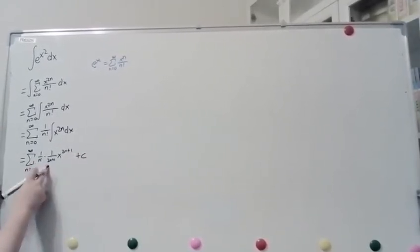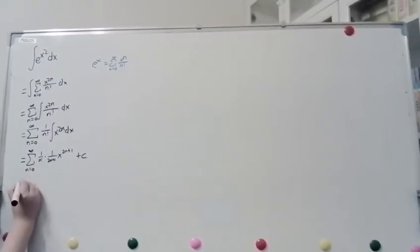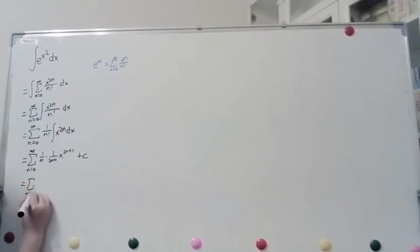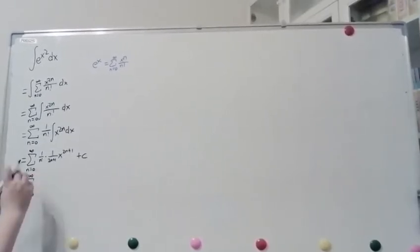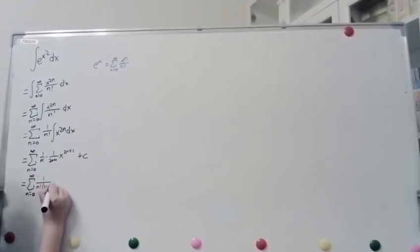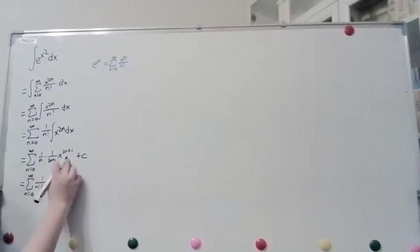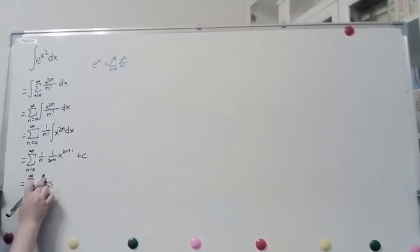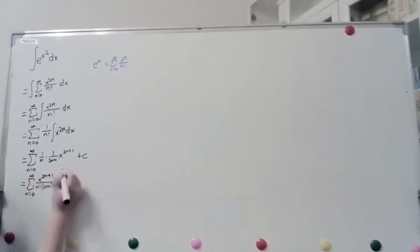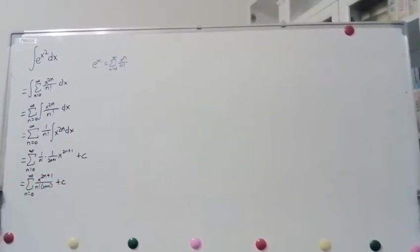So, you could distribute the n factorial, but I like to keep it just the way it is. So, we have equals the sum n equals 0 to infinity of these two denominators multiplied, and then the x to the 2n plus 1 will move to the top as a numerator. So, x to the 2n plus 1, and then plus c.